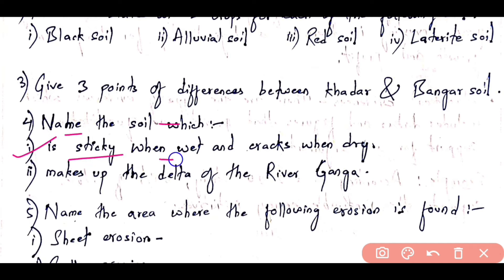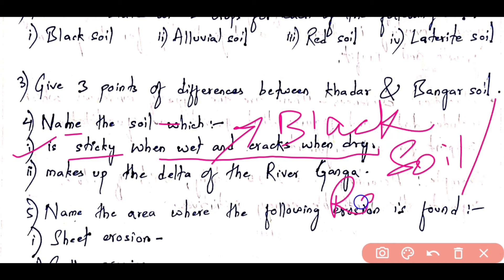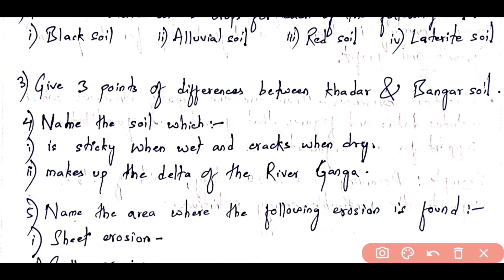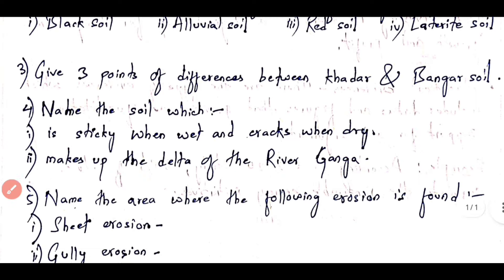Next, name the soil which is sticky when wet and cracks when dry — this is black soil. Black soil is also known as Regur soil (R-E-G-U-R). The second part: the soil which makes up the delta of the river Ganga is alluvial soil.